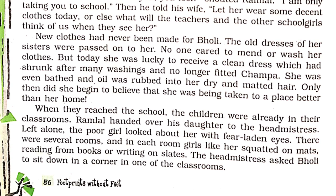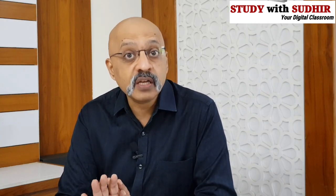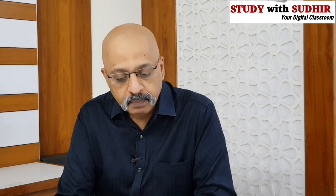When they reached the school, the children were already in their classrooms. Ramlal handed over his daughter to the headmistress and left. Alone, the poor girl looked about her with fear-laden eyes. There were several rooms and in each room girls like her squatted on mats, reading from books or writing on slates. The headmistress asked Bholi to sit in a corner of one of the classrooms. Bholi did not know what school was like — it was an alien atmosphere for her.